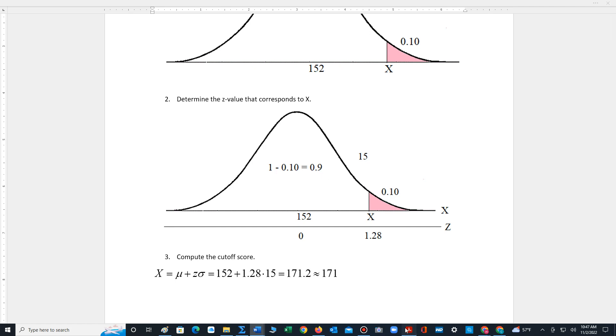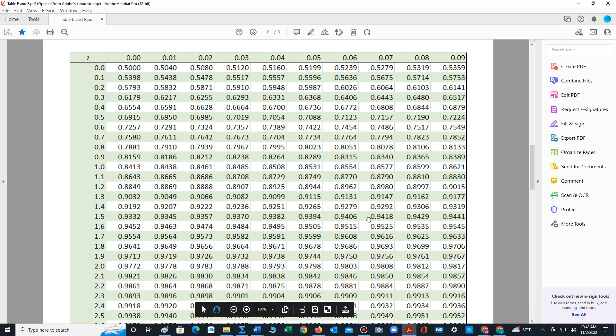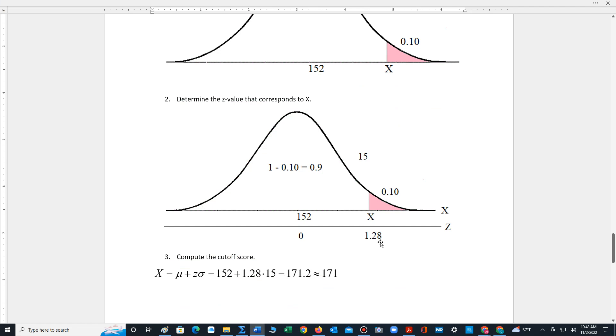We look up the area closest to 0.9 in table E. That's going to be 0.8997. Looking to the left, 1.2, looking up, 8. The Z value, 1.28.